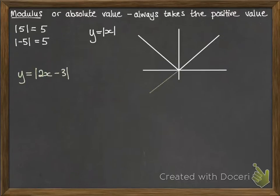So what happens with something like this? If we have y equals the modulus of 2x minus 3, well, first of all, you graph what you think 2x minus 3 looks like, and we're using a dotted line for anything that turns into a negative value, because that then gets reflected.